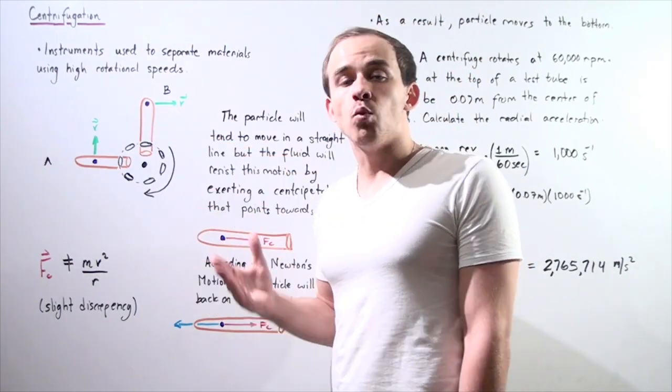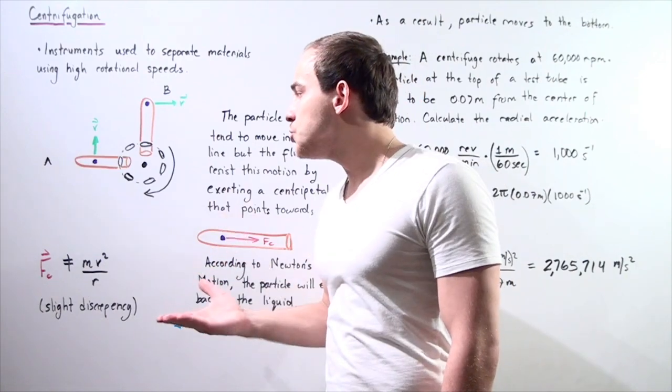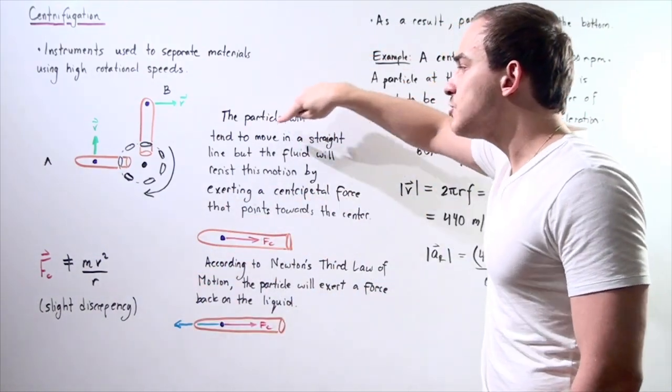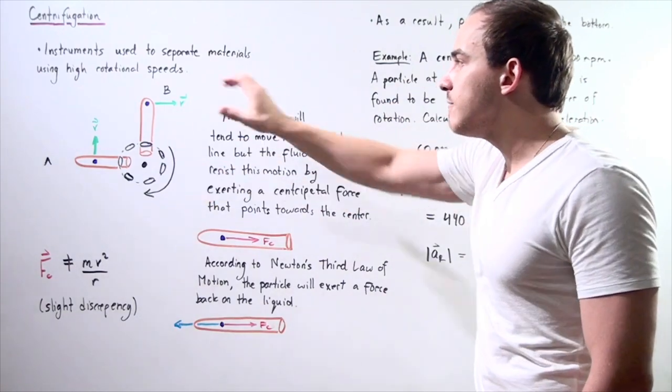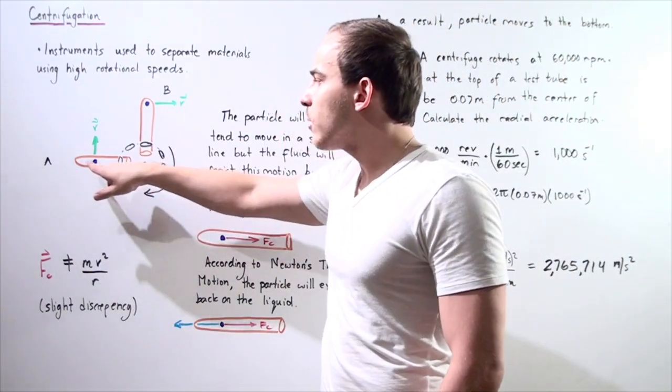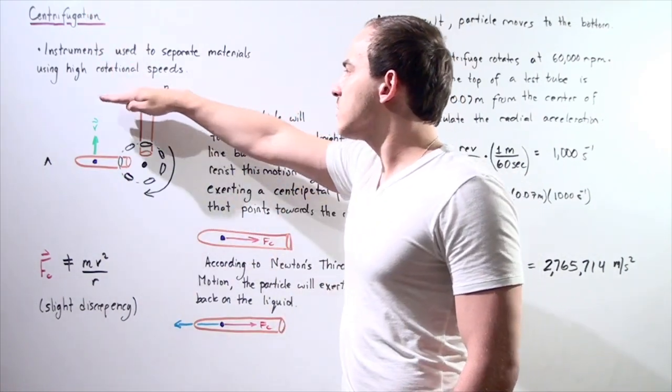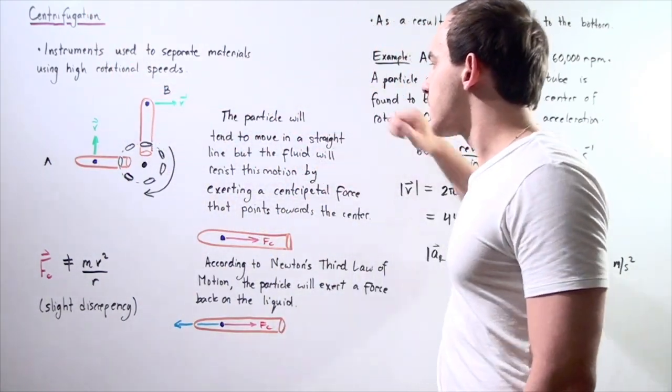So what exactly causes, what creates this motion? Well, the particle will tend to move in a straight line at any given point. In other words, at point A our particle tends to move this way and at point B our particle tends to move this way.